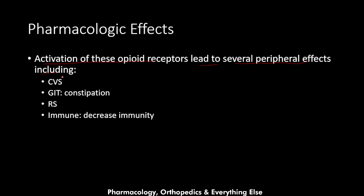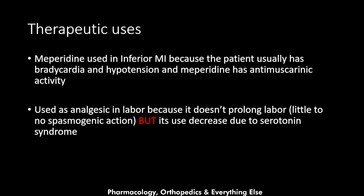Peripheral effects of meperidine include: effects on the cardiovascular system — a mild increase in heart rate, which is opposite to morphine's bradycardia. In the GI system it leads to constipation. Regarding the respiratory system, it leads to bronchoconstriction due to histamine release. Regarding the immune system, it leads to decreased immunity.